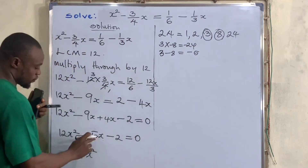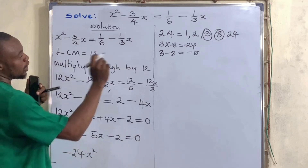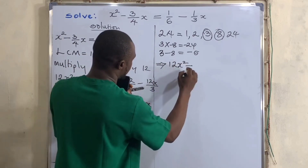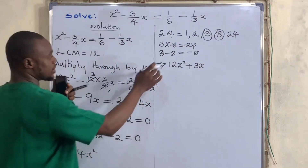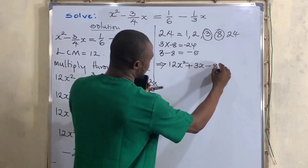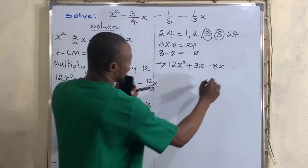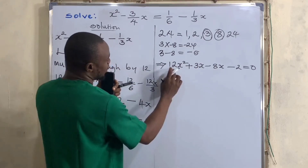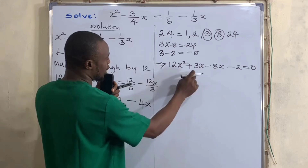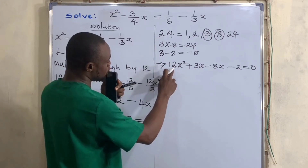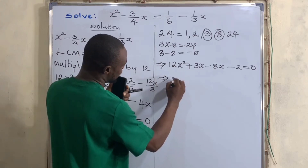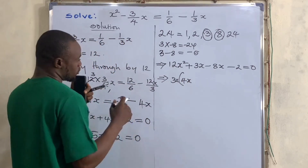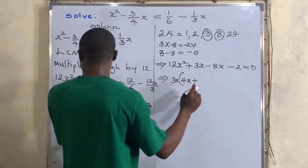So instead of writing minus 5x, we replace it with plus 3x minus 8x. This gives us 12x squared plus 3x minus 8x minus 2 equals 0. Now we group and find common factors. Both 12x squared and 3x share a factor of 3x, so we factor out 3x to get 3x times open bracket 4x plus 1.